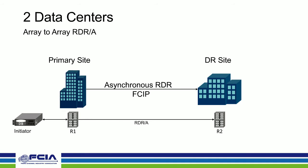Here are some different topologies for replication. The simplest: an initiator talking to array R1, and R1 talks to R2 at the remote site — in this case doing asynchronous RDR over some distance.